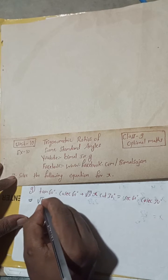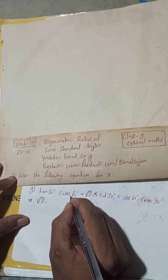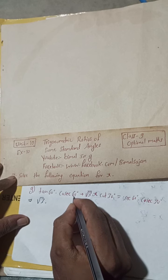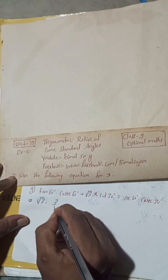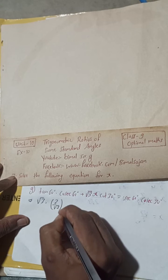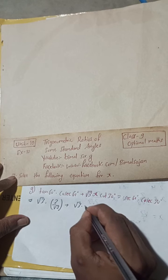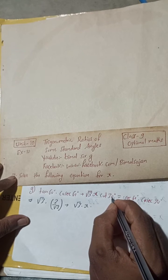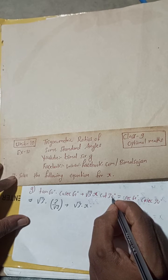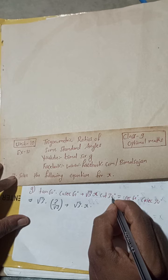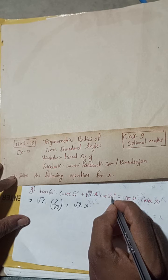Cosec 60 is 2 by root 3, plus root 3 into x into cot 30 degree. Tan 30 is 1 by root 3, so cot 30 is root 3.